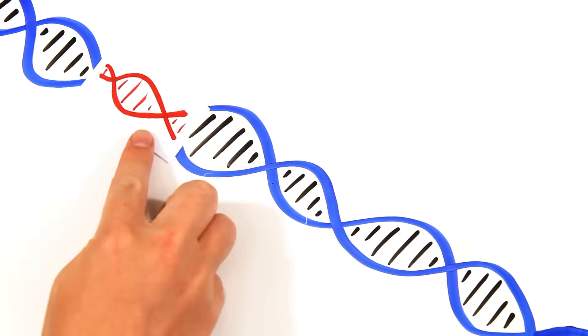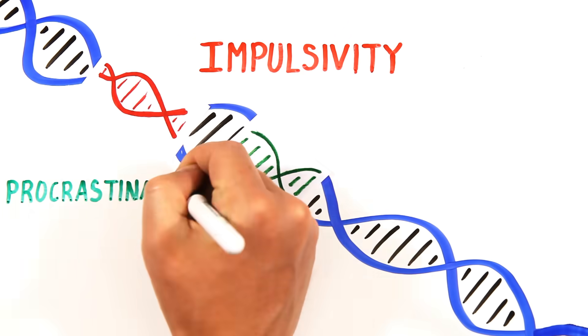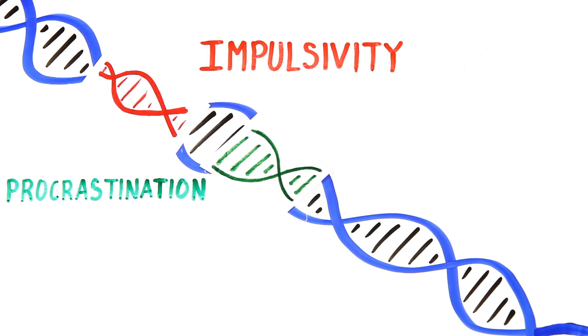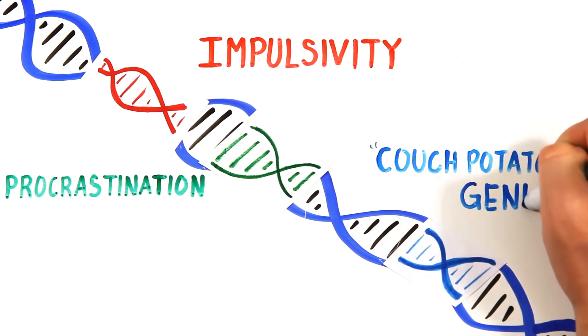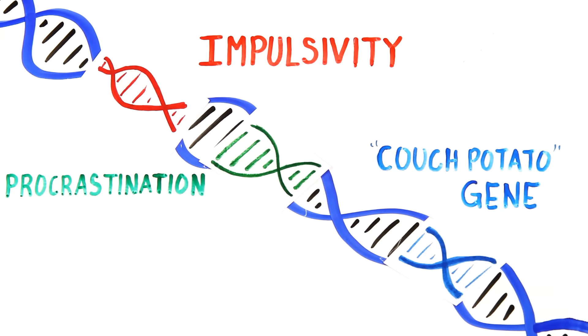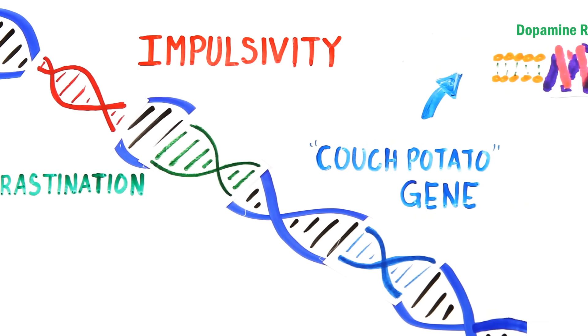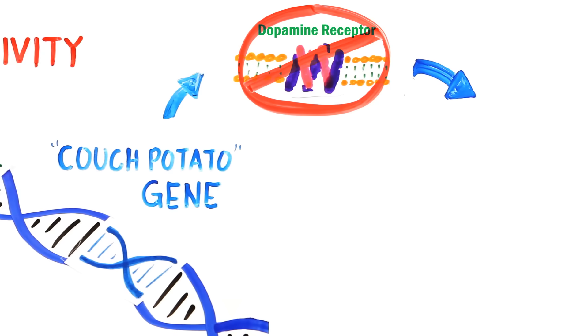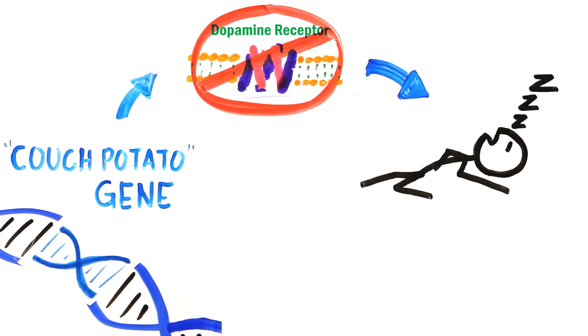We also inherit genes responsible for our other traits, from impulsivity to procrastination to work ethic and straight up laziness. And it turns out our physical laziness may be linked to a couch potato gene, or rather a mutation in a normal gene which regulates activity levels. This gene is responsible for a type of dopamine receptor. Without it, you're more likely to prefer sitting around and simply doing less than those who have the properly functioning gene.